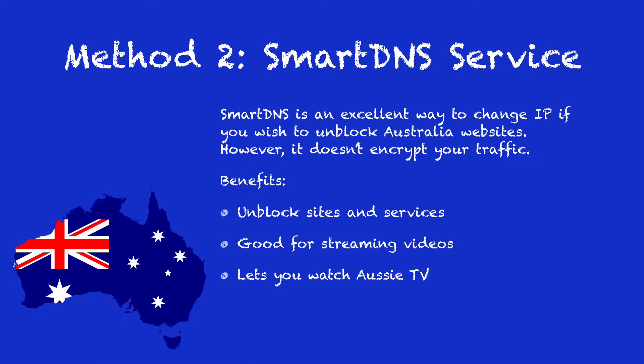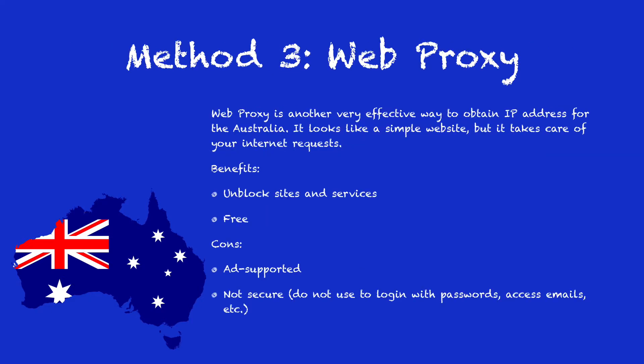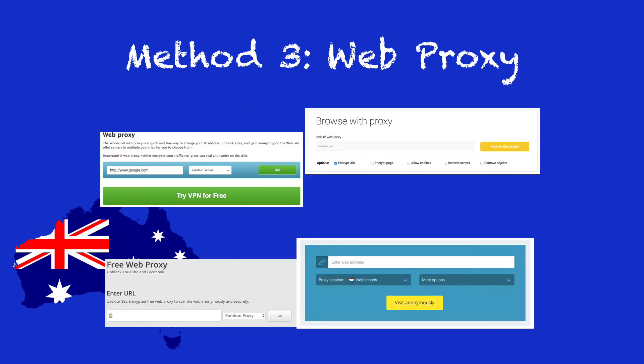Method 2: Smart DNS is a great tool if you wish to unblock websites. However, it doesn't encrypt your internet traffic. Method 3: Web Proxy is another very effective way to change your IP address. It is a free tool that you can use to unblock sites and services. Here you can see a few examples of web proxies.